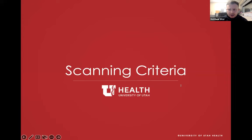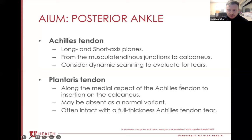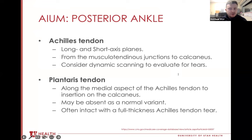Before we move on to case images, let's quickly review the scanning criteria for a complete ultrasound. There are five components of the posterior ankle as put forth by AIUM. The first is the Achilles tendon — scan in long and short axis from the musculotendinous junction to where it inserts on the calcaneus. Also consider dynamic testing by plantar and dorsiflexing the ankle. Next is the plantaris tendon, which if there's no pathology is really hard to see in short axis because it's so thin. Look for it on the medial aspect of the Achilles tendon down to its insertion on the calcaneus. Keep in mind it may be absent and don't be surprised if it remains intact in the setting of a full thickness Achilles tendon tear.